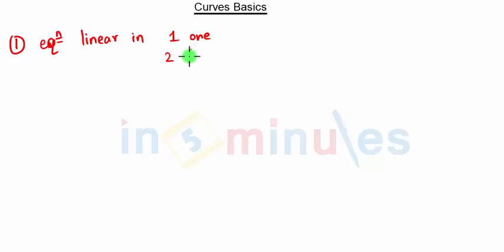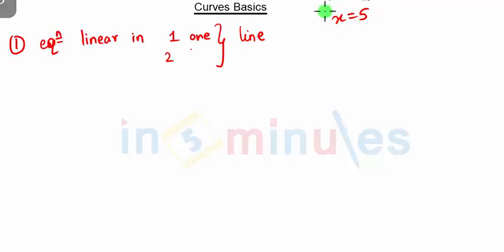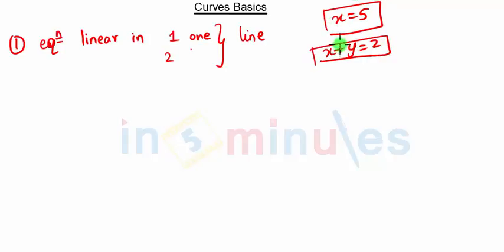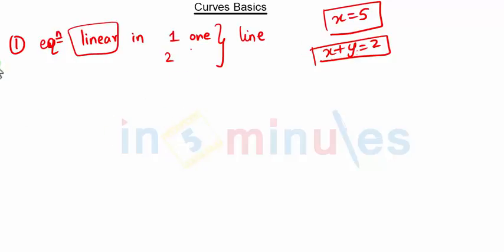For example, x = 5 is a line parallel to the y-axis, and x + y = 2 is also a straight line. Rule 1: whenever we have a linear equation in one variable or two variables, it will always represent a line. Linear means the power of x and y is always 1.